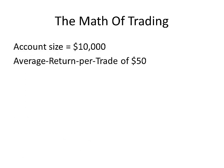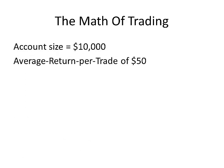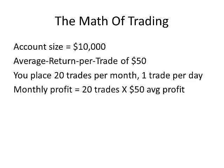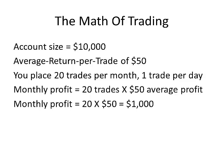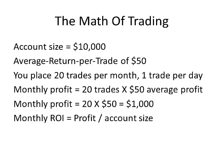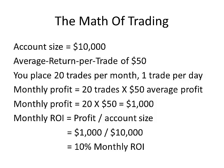Let's look at the math: account size of $10,000, average return per trade of $50. You place 20 trades per month — that's just one trade per day, nothing crazy. Your monthly profit is going to be those 20 trades times the average of $50, so that's $1,000. Your monthly ROI is the profit divided by your account size: $1,000 divided by $10,000, which does indeed give you a 10% monthly ROI.